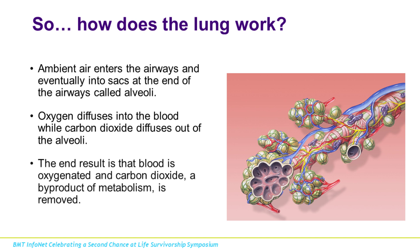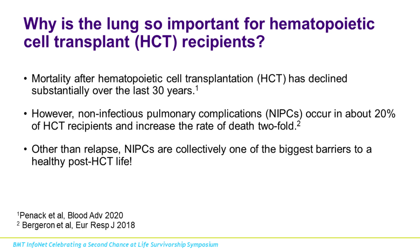Ambient air enters the airways and gets into sac-like structures called alveoli — this is where the magic happens. The alveoli are very thin structures, and oxygen readily diffuses from the air into the blood, while carbon dioxide diffuses out of the blood into the alveoli and is exhaled. Carbon dioxide is a byproduct of normal metabolism. It's important both to get oxygen to the blood and to ensure carbon dioxide is removed, as that can have bad consequences for your health.